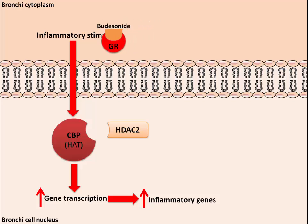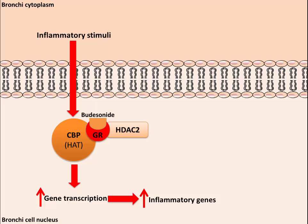This allows the translocation of this complex to the bronchi nucleus, which binds to both HDAC2 and CBP or HAT. This receptor complex prevents the production of inflammatory genes that may be responsible for causing bronchoconstriction.